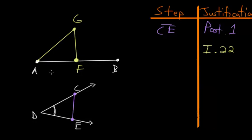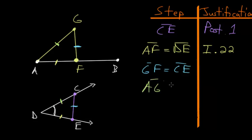This line AF is equal to DE. Let's write these down: AF equals DE, GF equals CE, and AG equals DC.